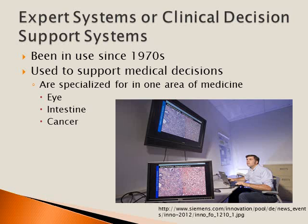Expert systems, also called clinical decision support systems, have been in use since the 1970s. They are used to support medical decisions and are specialized for one area of medicine — such as the eye, intestine, or cancer. Importantly, they are only used to support medical decisions, not to make their own medical decisions, because the doctor still has to be in charge for liability reasons.